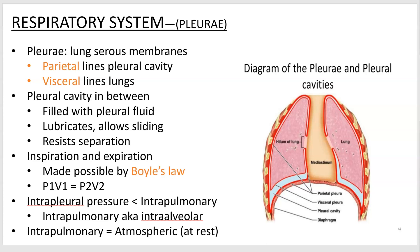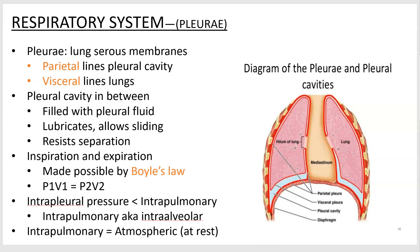A couple more summary points: intrapleural pressure is the pressure inside the pleural cavity, and intrapleural pressure is less than intrapulmonary pressure — another name for which is intra-alveolar pressure. The air pressure in your lungs is greater than the pressure exerted by the fluid, causing a net outward pressure so the lungs stick to the walls of the thoracic cavity. When your nasal cavity is open and continuous with the atmosphere, intra-alveolar pressure equals atmospheric pressure at rest.